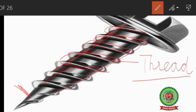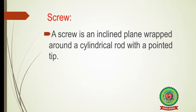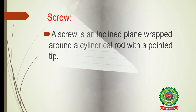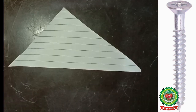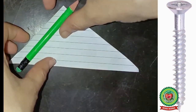The definition of a screw is not given in your books, so you need to note it down: a screw is an inclined plane wrapped around a cylindrical rod with a pointed tip. Let's understand this definition with the help of an activity. Take a piece of paper, cut it into a triangular shape, then take a pencil and wrap the paper around it carefully.